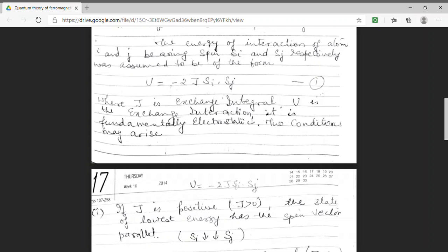For U to be negative and we have J positive, U can be only negative if the two spin vectors, they are parallel. So, the first condition is the state of lowest energy must have spin vectors parallel.